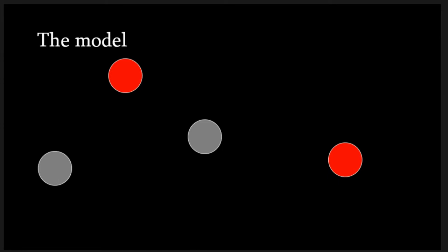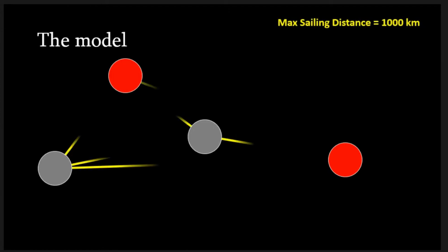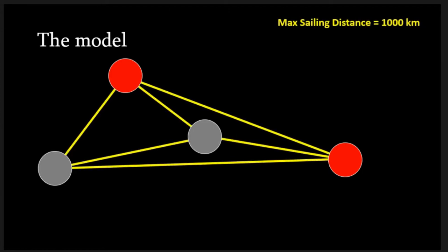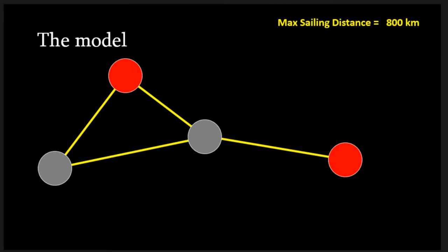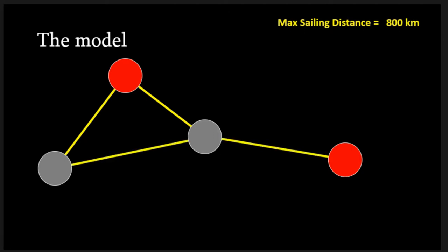We connect the islands based on a maximum sailing distance — the maximum distance that individuals could sail comfortably between different island groups. The inbuilt assumption is that when we reduce the sailing distance, the network becomes less and less connected until parts become disconnected. There is no difference based on distance within that threshold — it's just as easy in this model to sail 100 kilometers as it is to sail 800 kilometers. We realize that's an assumption; we're simplifying and saying this is the limit that people can sail to.